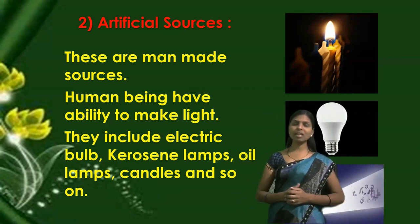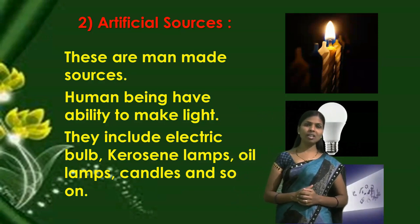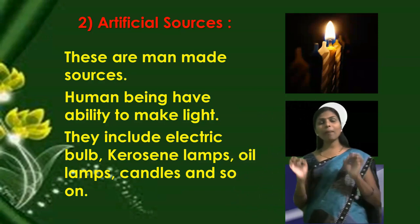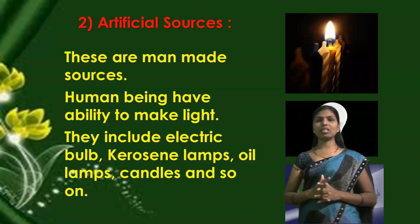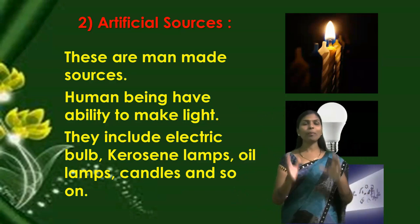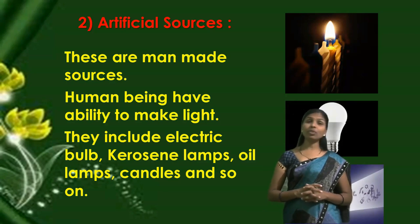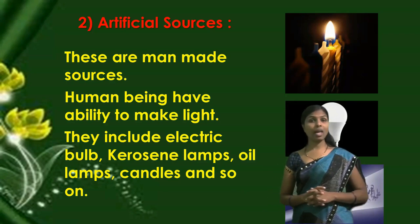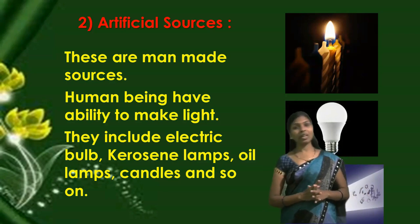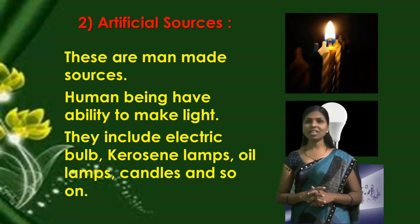Artificial sources of light means these are man-made sources — human beings have the ability to make this light. They include different types of lamps, electric bulbs, kerosene lamps, oil lamps, lanterns, and candles. These are all examples of artificial sources of light.